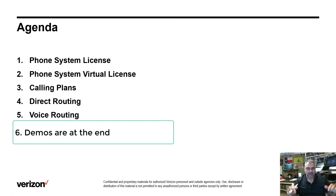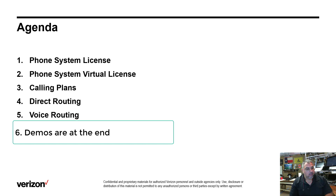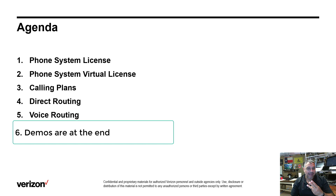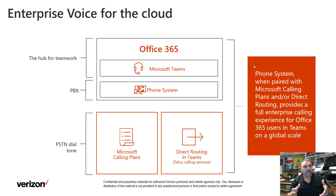Here's the agenda — I'll put the agenda items in the timeline in the description below so you can fast forward to each one. We're going to look at the Phone System license, Phone System Virtual licenses, Calling Plans, Direct Routing, and how voice routing works in Microsoft Teams. Let's get started.